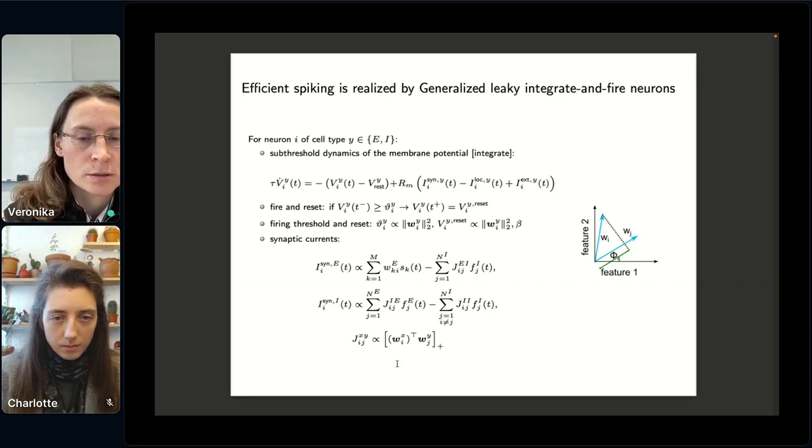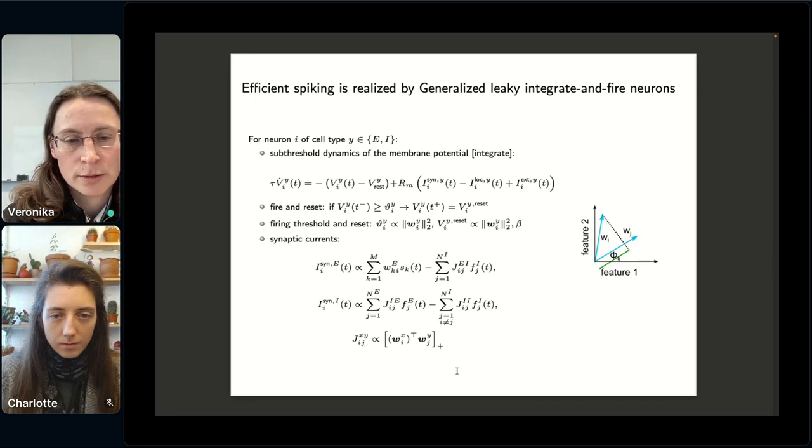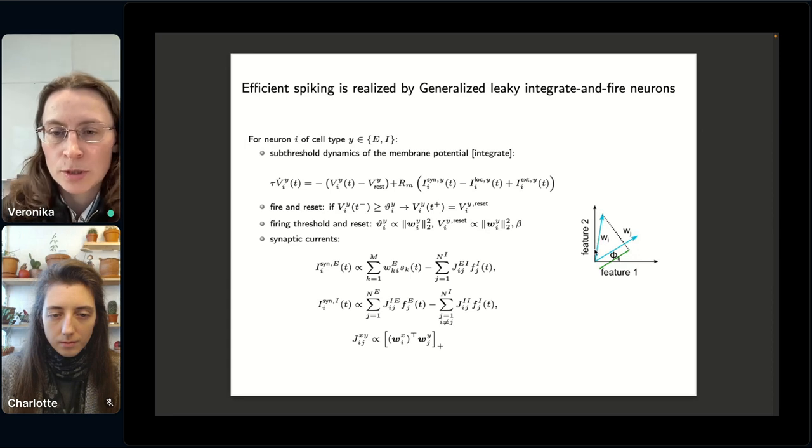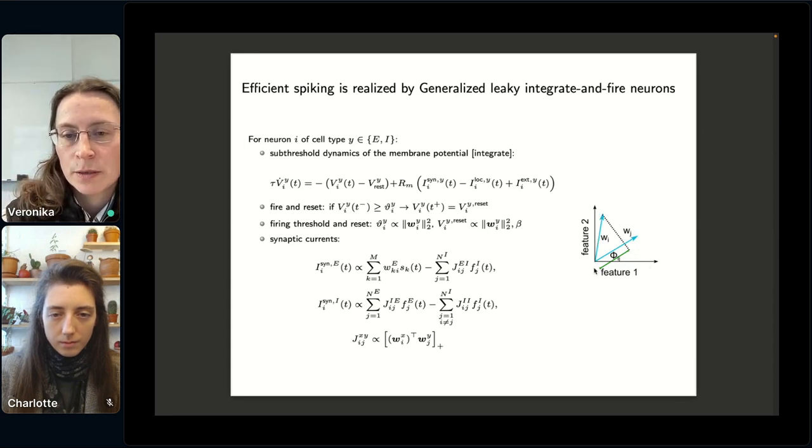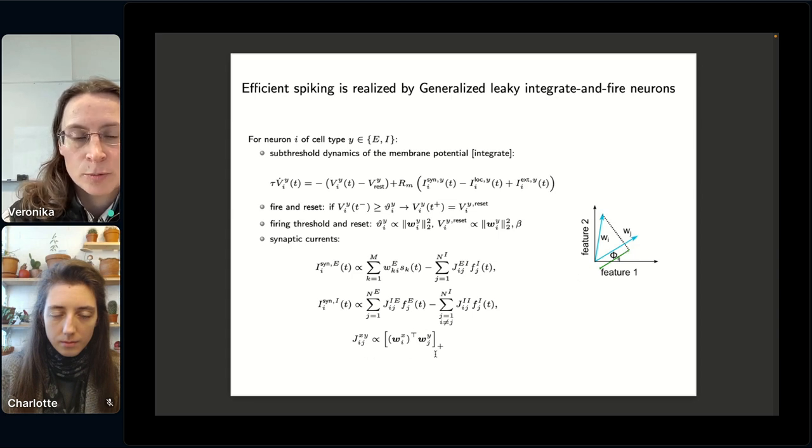So to illustrate this, you can think of the space of the features. Let's say that we have two features and our selectivity vectors, they live in this feature space. So let's say we have a vector for the neuron i and for the neuron j. And the more similar they are, the bigger is their dot product. And in the case of our model, we will have that the more similar the selectivities of the two neurons are, the stronger the synapse between them.